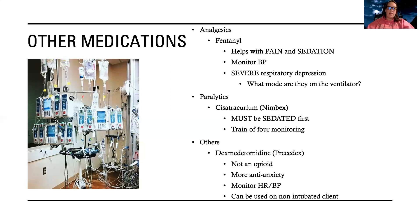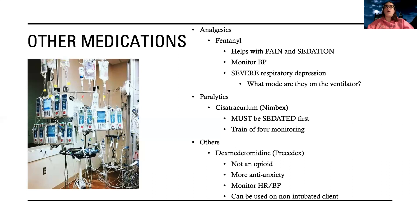The last one is dexmedetomidine — I still call it Precedex. This is not an opioid, so a lot of doctors are preferring this these days because there are fewer long-term side effects and withdrawal concerns. It's more of an anti-anxiety medication. Like propofol, it can drop your heart rate and blood pressure, and some people can have a severe heart rate drop, so you need to watch closely. The great thing about Precedex is it can be used on non-intubated patients. If a patient is rowdy and I'm trying to get their breathing tube out but they won't calm down, I can give this and keep it on even after pulling the breathing tube out. We also use this on patients who aren't intubated, like alcohol withdrawal.